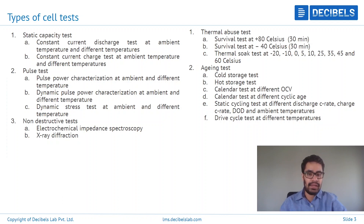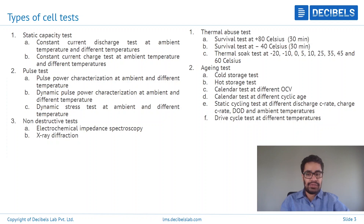Coming to the most advanced type of testing, which is called a drive cycle test — this is basically subjecting the cell to real-life driving situations, where how exactly the cell or battery pack is loaded and unloaded under different driving situations such as city driving, highway driving, or suburban driving is tested to see how exactly the capacity changes over time. These are all the different types of tests one can perform on a particular cell, a set of cells, and overall an entire battery pack as well.